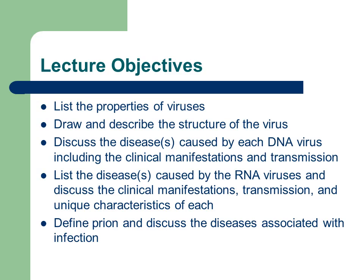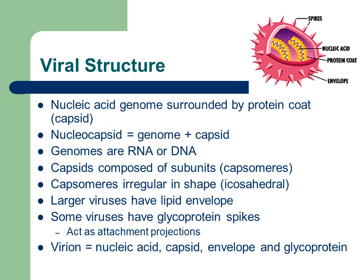By the end of this lecture you should be able to list the properties of viruses, draw and describe the structure of a virus, discuss the diseases caused by each DNA virus including clinical manifestations and transmission, list the diseases caused by RNA viruses and discuss their clinical manifestations, transmission, and unique characteristics, as well as define a prion and discuss the diseases associated with prion infection.